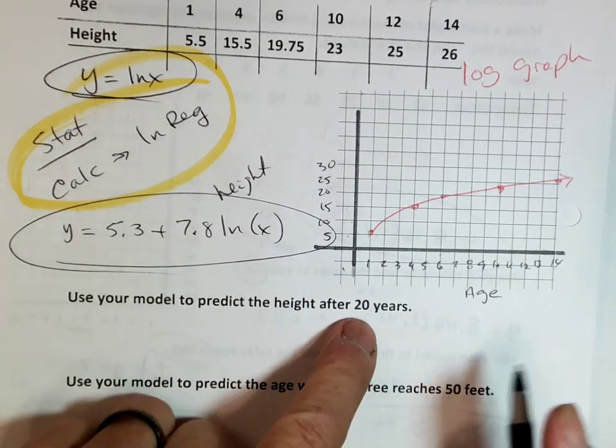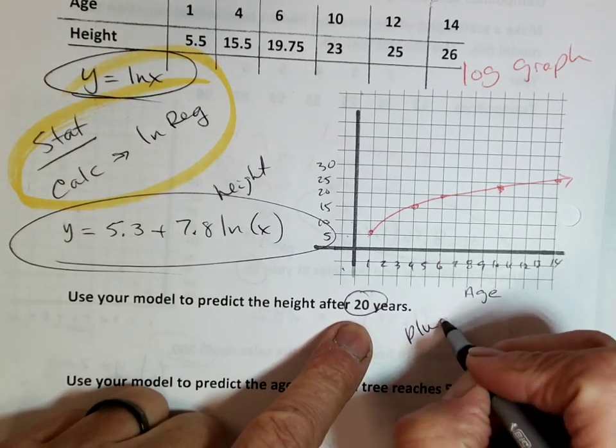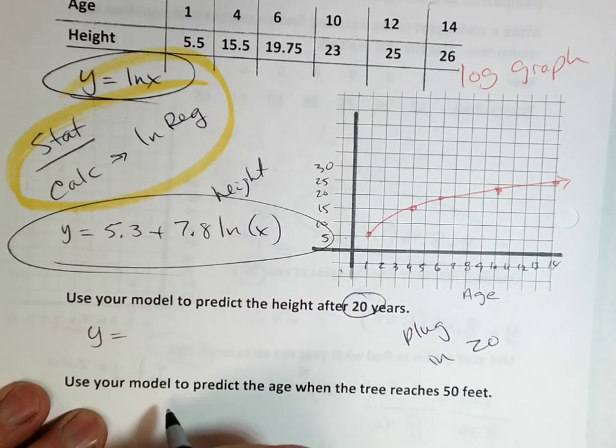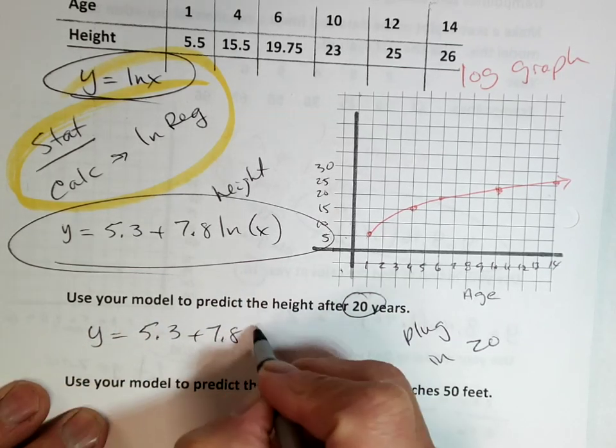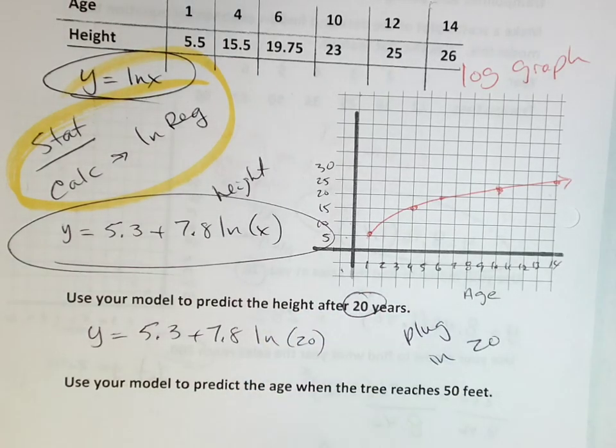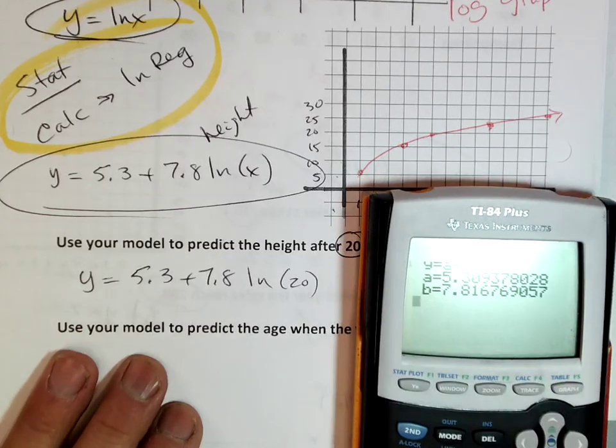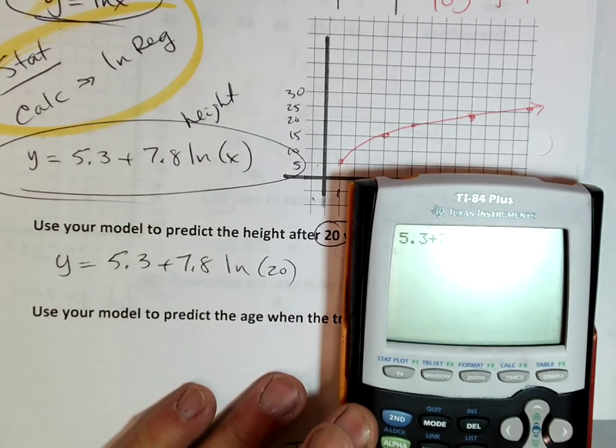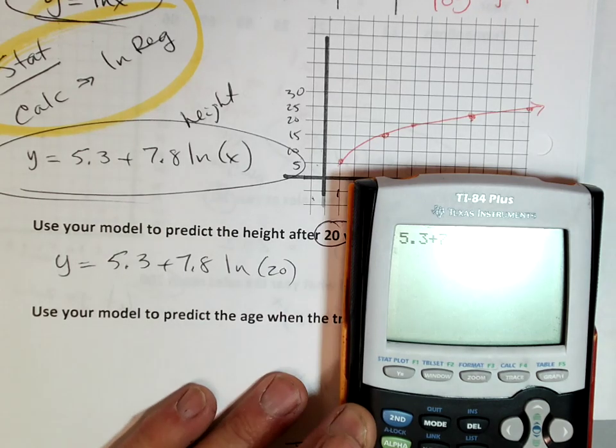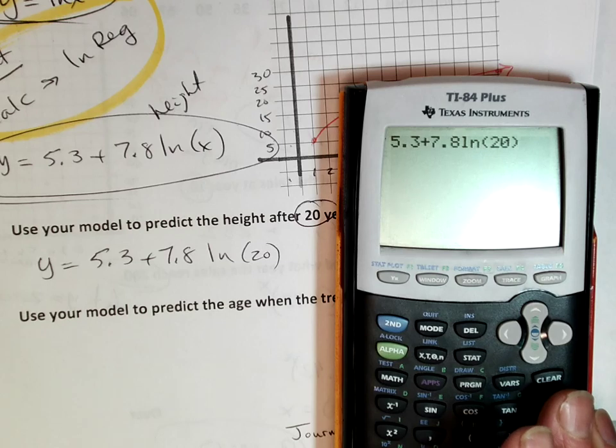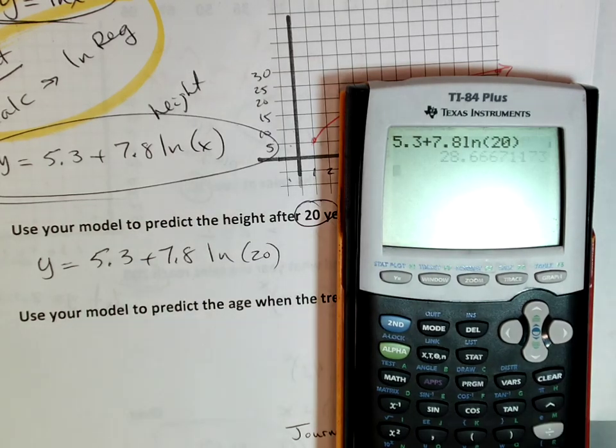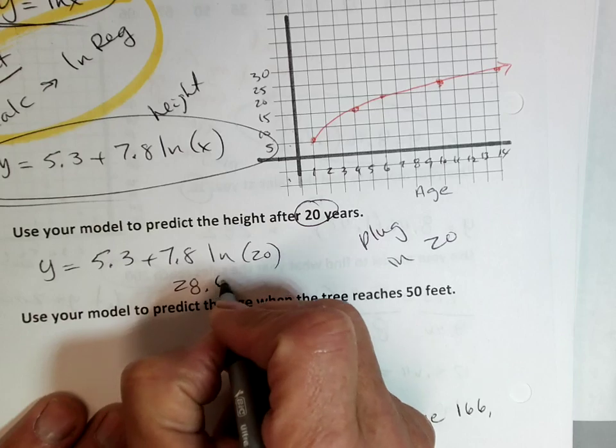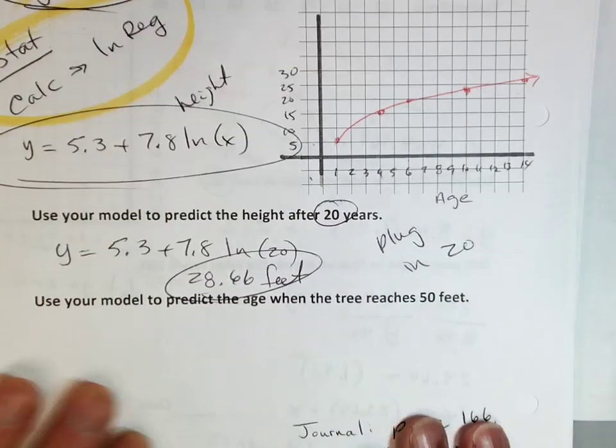Use your model to predict the height after 20 years. So we're going to plug in 20. Use my calculator. Y equals 5.3 plus 7.8 ln of 20. I'm just going to plug it right in my calculator. I've got my 5.3 plus 7.8 ln of 20. Enter, and it's about 28.66. So that would be the height of the tree, 28.66 feet. After 20 years, that's how tall my tree is.